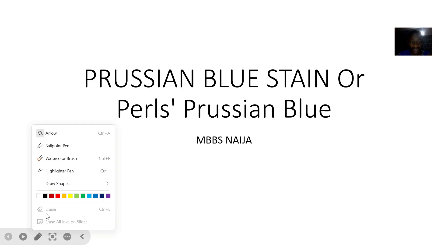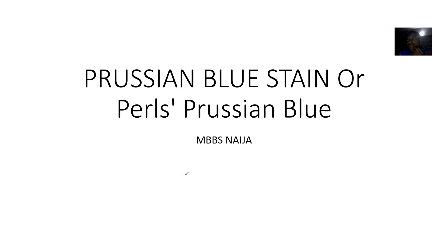We're looking at some stains that can be used in the anatomical pathology lab. We're starting with five of them, and the first one on our list is the Prussian blue stain.